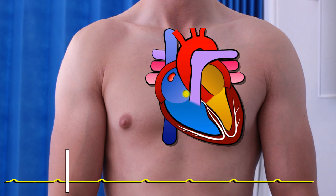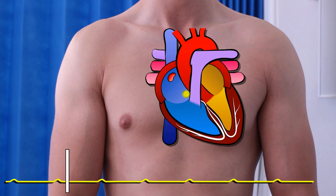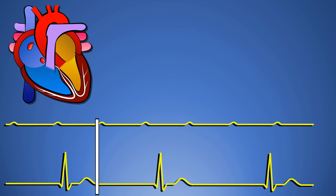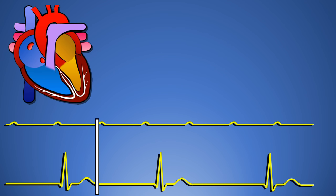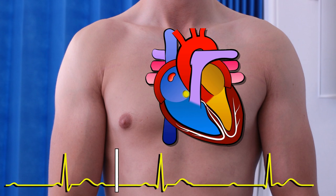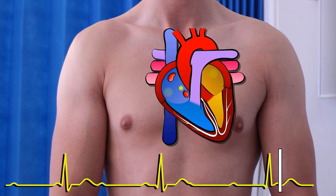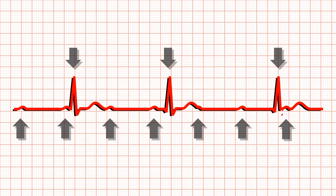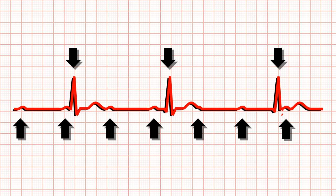Let's move on to third degree heart block, more commonly known as complete heart block, because the impulse is completely blocked. The atria are doing their thing, but none of the impulses are getting through. Thankfully, the heart has a failsafe — an accessory pacemaker kicks in and fires off the ventricles. This is known as an escape rhythm. Unfortunately, it is not coordinated with the atria. There is no relationship between the P-waves and the QRS complexes on the ECG. You should be able to calculate both an atrial and a ventricular rate by looking at the P-waves and QRS complexes separately. The ventricular rate will typically be slower.